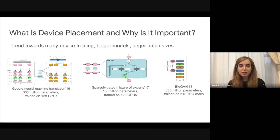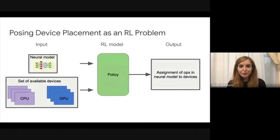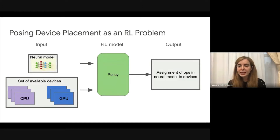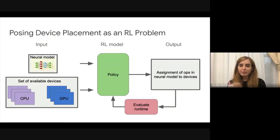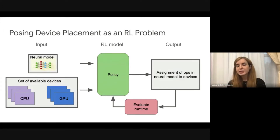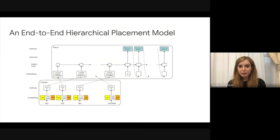As these models are getting bigger and bigger, device placement is becoming more and more important. Our approach was to pose it as a reinforcement learning problem where we train a policy that takes as input a neural network and a set of available devices, and outputs an assignment of the ops in the neural net onto the devices. Once this assignment is done, we can actually run the neural net according to this placement, evaluate the runtime, and use it as feedback to update the policy. We iterate through this many times until the policy gets optimized and outputs optimized solutions.